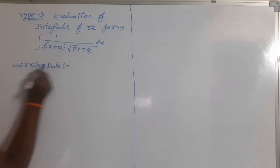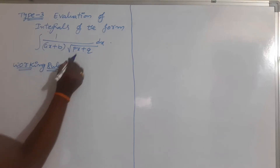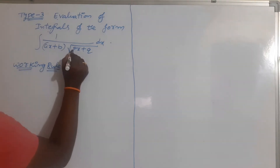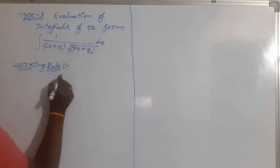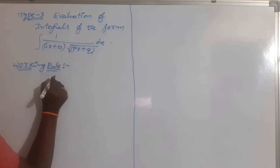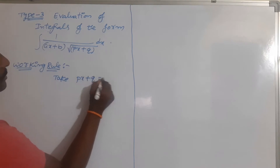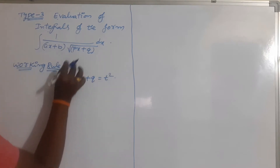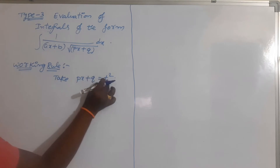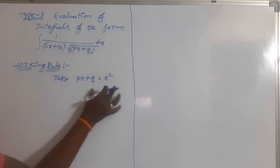This model is very easy. To remove the root, simply take px + q equal to t squared. By substituting px + q equal to t squared, we can easily solve this problem.